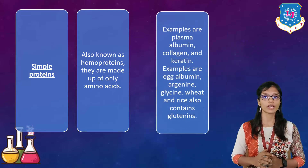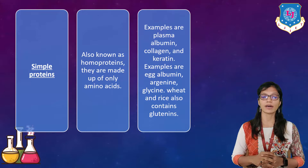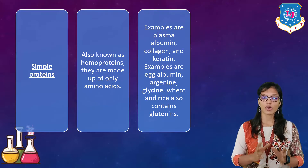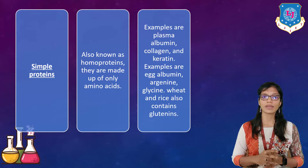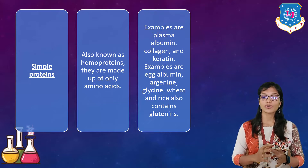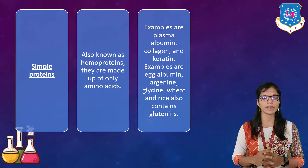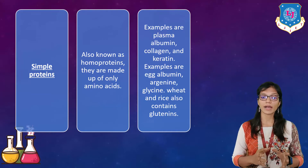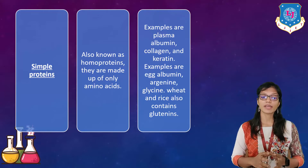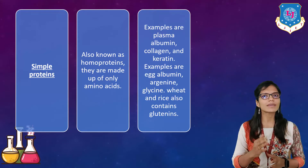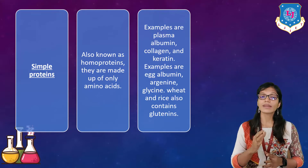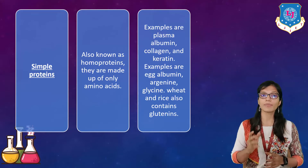Examples of simple proteins or homoproteins are plasma albumin, collagen, and carotene. They are basic proteins generally available everywhere — in our hair, skin, nails, etc. Further examples are egg albumin, arginine, and glycine. Wheat and rice also contain glutenins, which contain glycine — one type of simple protein.